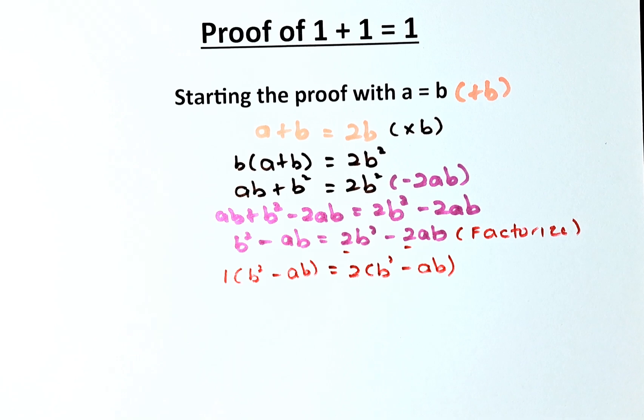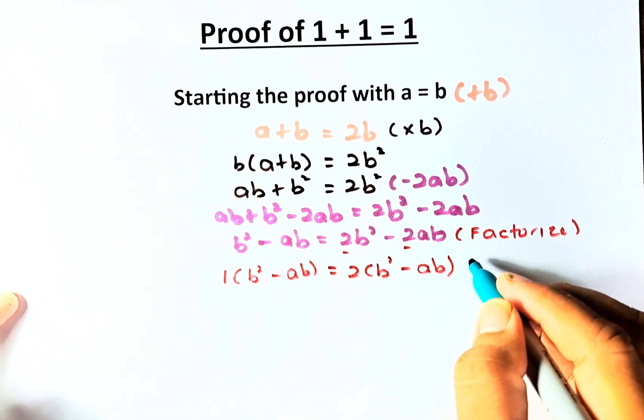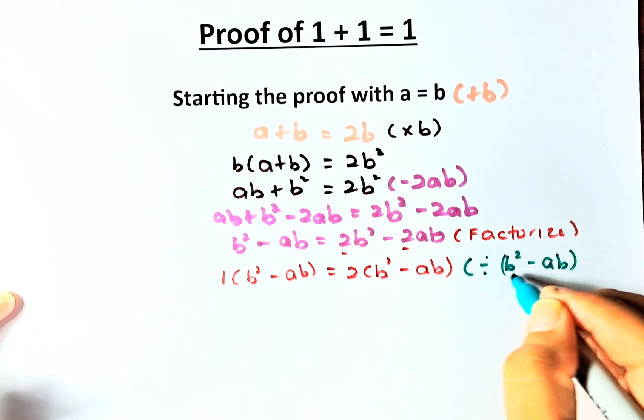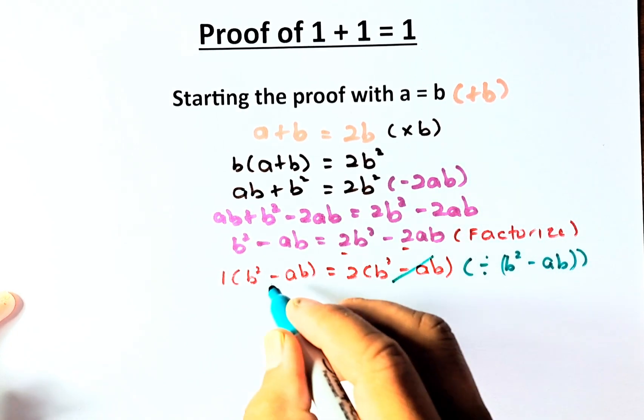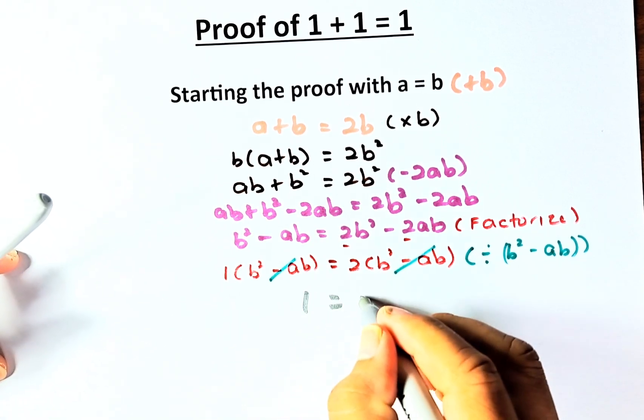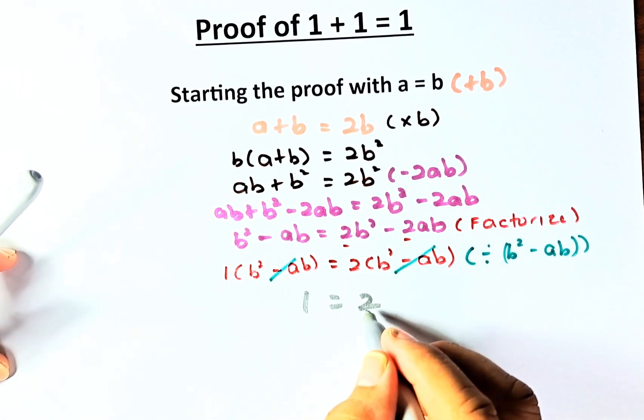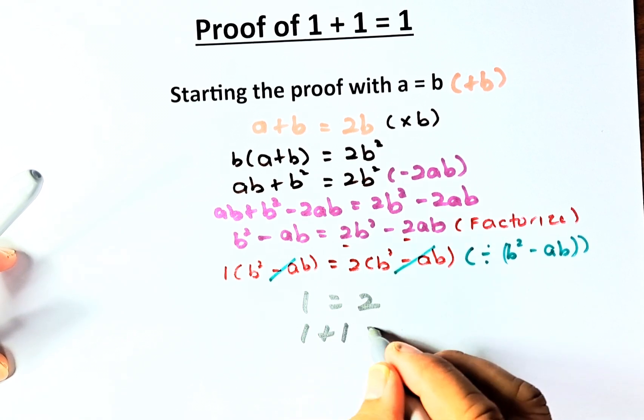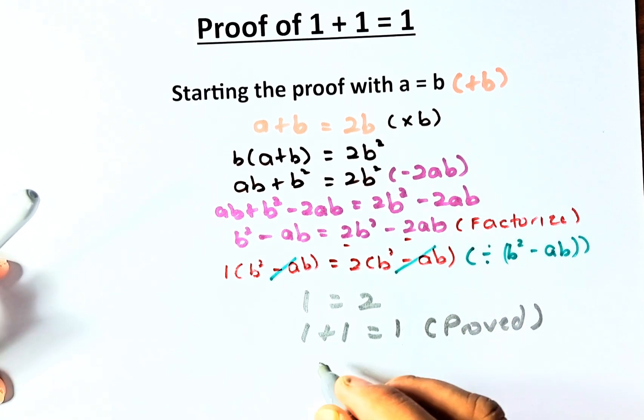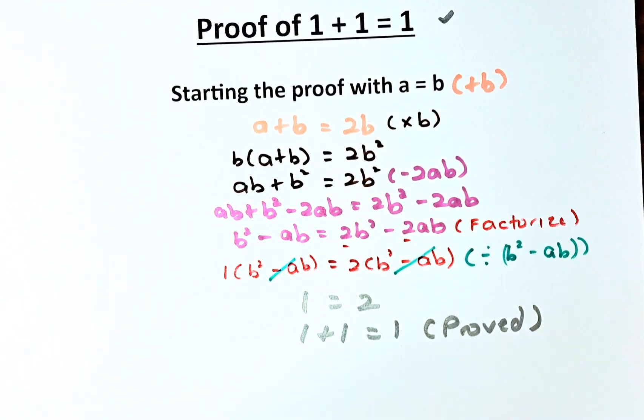And of course, from here, because b squared minus ab are the same, we are going to divide by b squared minus ab. So this and this will cancel out. And now we come up to a spectacular result: 1 equals to 2. Or 2 is the same as 1 plus 1, so 1 plus 1 equals to 1. We have proved that 1 plus 1 equals to 1.